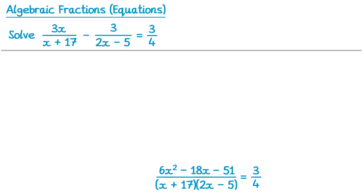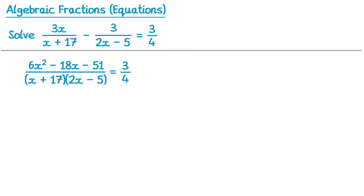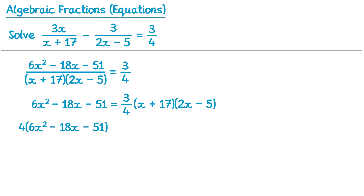So now we've written the left hand side as a single fraction. What we're going to do next is multiply both sides by both of those brackets on that denominator. So if we multiply the left hand side by x plus 17 and 2x minus 5, that will clear the fraction. We've got 6x squared minus 18x minus 51, and on the right hand side we've just multiplied this 3 quarters by both of those brackets. Now to deal with this fraction, you can just multiply both sides by 4. If we multiply the left hand side by 4 we get 4 lots of the left hand side, and if we multiply the right hand side by 4 that 4 will cancel, so we've just got 3 lots of those two brackets.